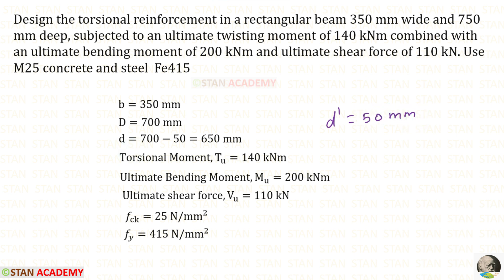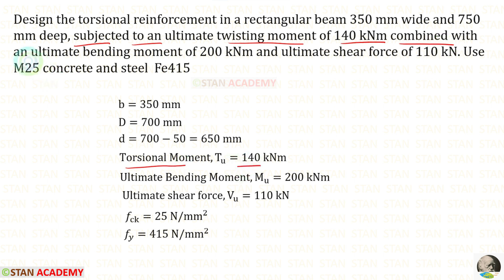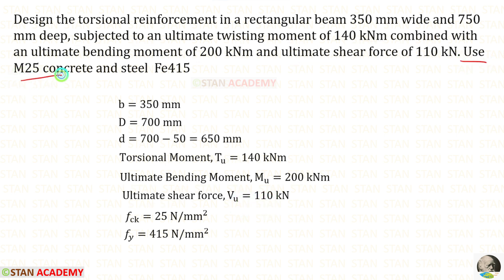So the effective depth d will be 700 minus 50, giving 650 millimeter. The beam is subjected to an ultimate twisting moment of 140 kilo Newton meter, combined with an ultimate bending moment of 200 kilo Newton meter and an ultimate shear force of 110 kilo Newton. Use M25 concrete and steel Fe 415, so FCK is 25 and FY is 415.